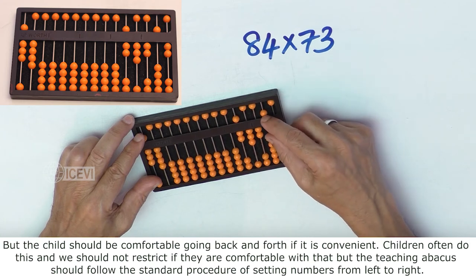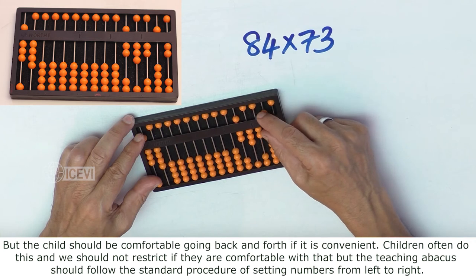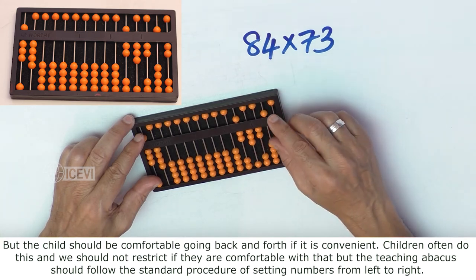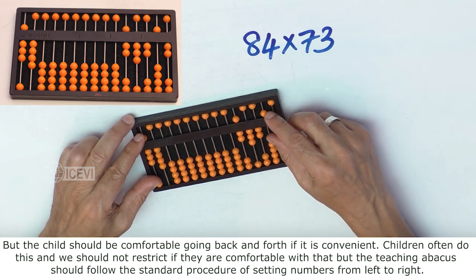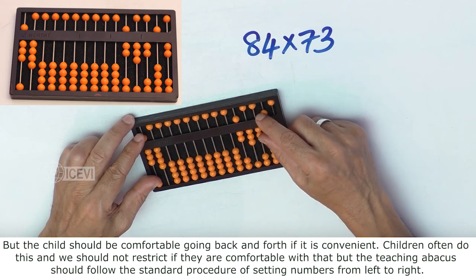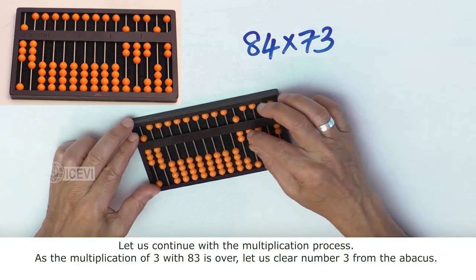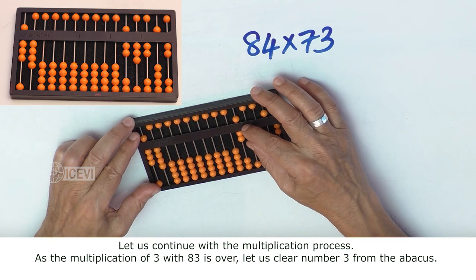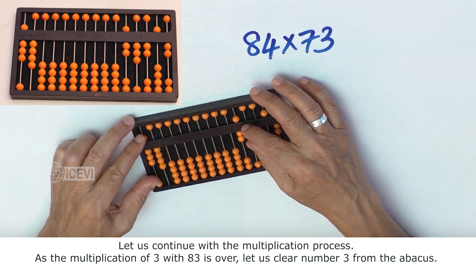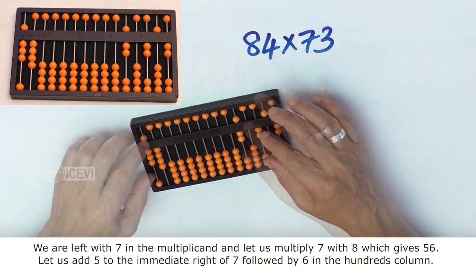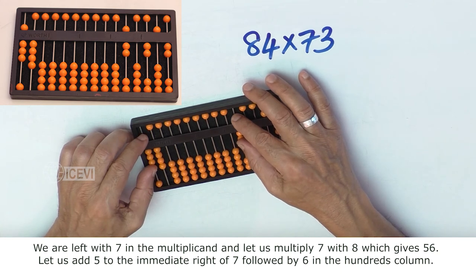No. But the child should be comfortable going back and forth if it is convenient. Children often do this and we should not restrict if they are comfortable with that. But the teaching abacus should follow the standard procedure of setting the numbers from left to right. Let us continue with the multiplication process. As the multiplication of 3 with 84 is over, let us clear 3 from the abacus.